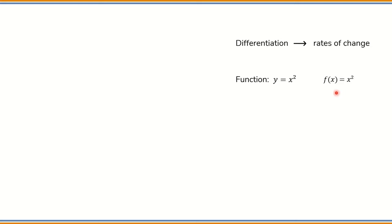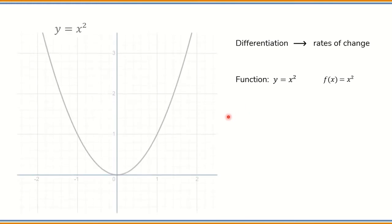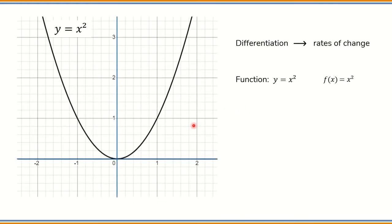This is another way to represent the same function. If we draw this function in a graph, this is the result. Differentiation helps us find the slope of this curve at any specific point. The slope is like the steepness of the curve. We are going to select a point. The slope at this point of the curve can be visualized as the slope of the tangent line to the curve at that point.